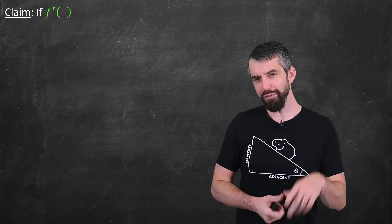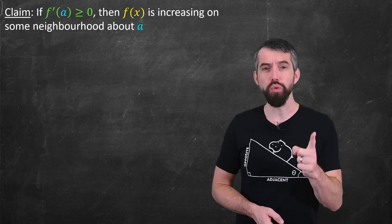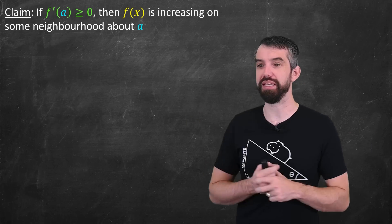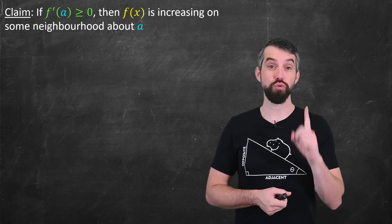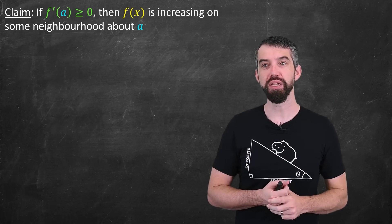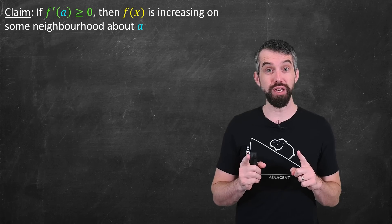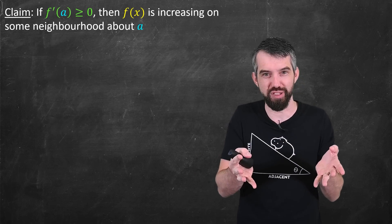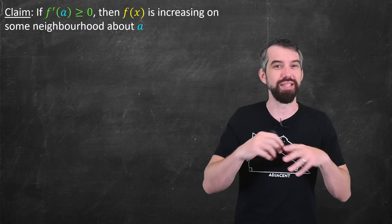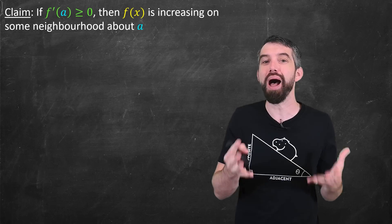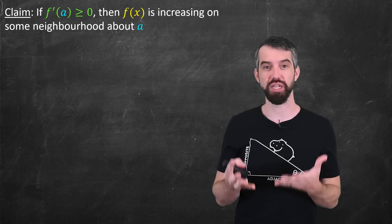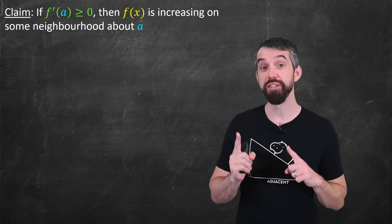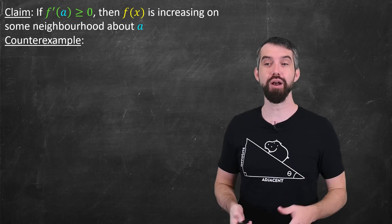But what if you had the local property only at one point? You might conjecture a theorem like this: suppose the derivative is positive at some particular point — then the function is increasing on at least some little interval around that point, some neighborhood where it actually is increasing. This is a very reasonable guess, but it turns out to be false. There's a counterexample.